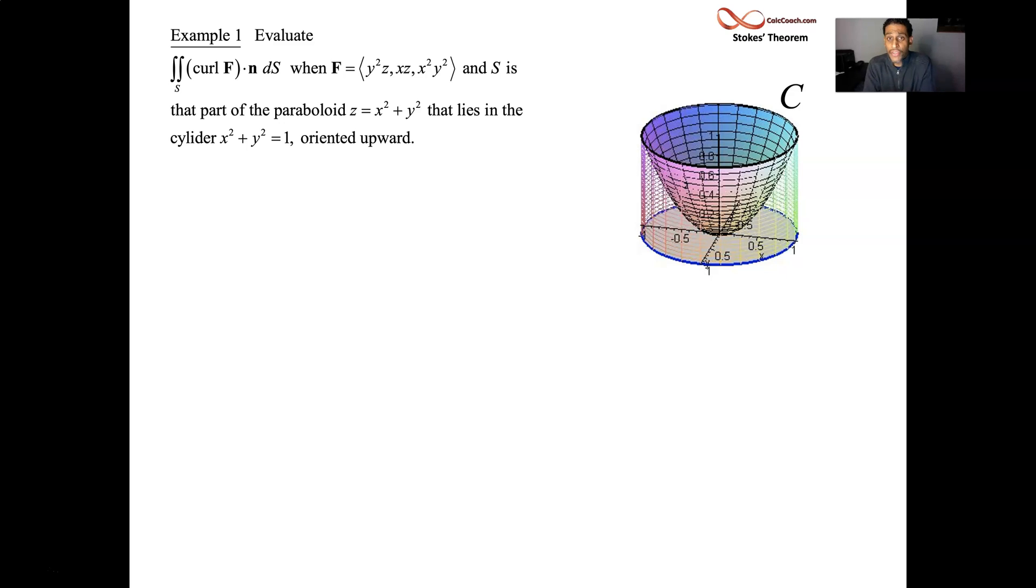We start down at the origin for the vertex of the paraboloid, and then it grows out until it reaches the x squared plus y squared equals one cylinder, and we stop there. Our surface is the paraboloid. It's not closed. The boundary of the surface is the rim of the bowl-like shape. And so if we're going to actually execute Stokes' theorem, we're not going to calculate the curl of F dot n dS over that surface. No.